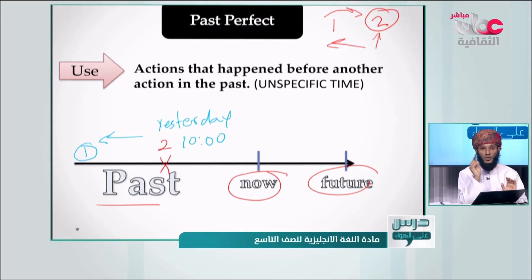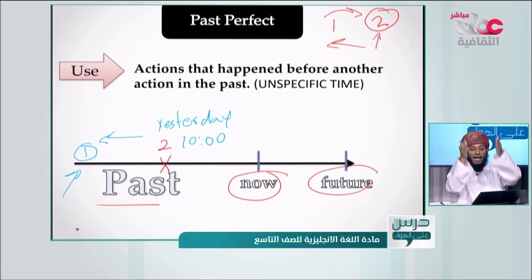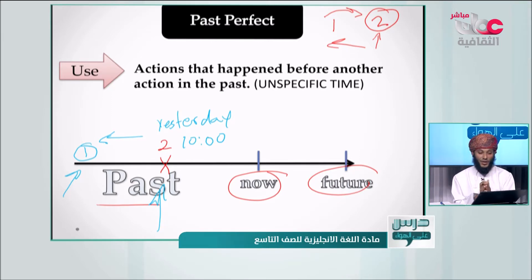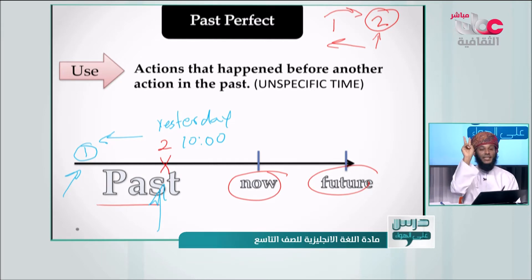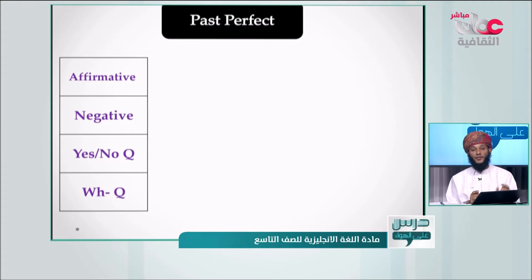We have two actions: the first one happened before the other one. We know the time of the second action, but we don't know the exact time of the first one. We're going to have some examples to make everything clear. Keep in mind that we have two actions.